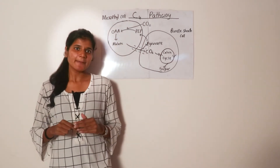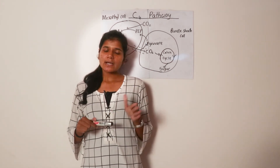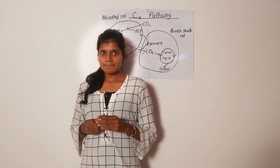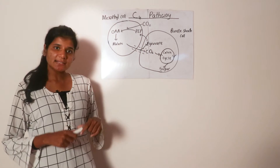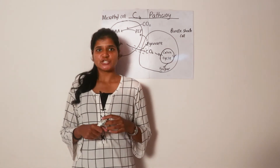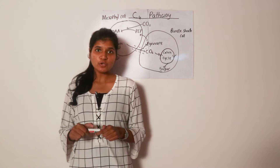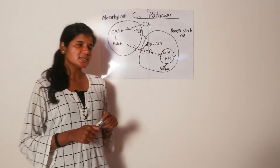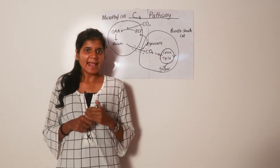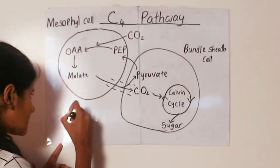C4 plants are plants in which the first stable compound of photosynthesis is a four-carbon product. In the C4 pathway, the carbon dioxide concentration mechanism is divided between two specialized cell types: mesophyll cells and bundle sheath cells. These mesophyll cells and bundle sheath cells are in close contact, interconnected by plasmodesmata — the cell junctions found in plants. In C4 plants, these two cell types are organized in the leaves in a special way called Kranz anatomy.